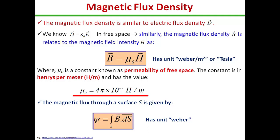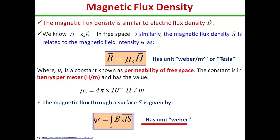Its unit is henry per meter and it has value mu naught equal to 4π × 10 to the power minus 7. Therefore, the magnetic flux through a surface S is given by ψ equal to the surface integral of B dot ds, where the magnetic flux ψ has the unit weber, and the magnetic flux density has unit weber per meter square, or you can say tesla.